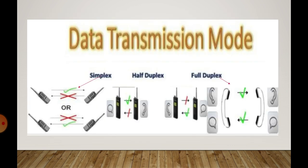Next diagram is also a data transmission diagram. Simplex mode: data only in one direction. Second diagram half duplex: when sender sends data, receiver just listens, but when receiver wants to respond, then the second one starts and first one listens. Third, full duplex: both of them are communicating with each other at the same time — sender sends, receiver receives, both hear each other. This is the diagram of simplex, half duplex, and full duplex mode in an easy way.